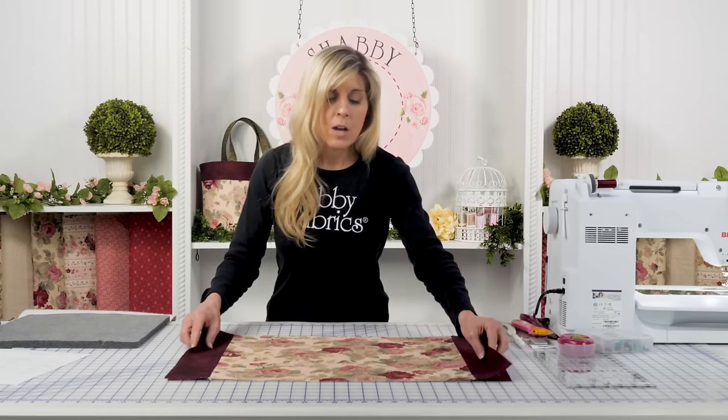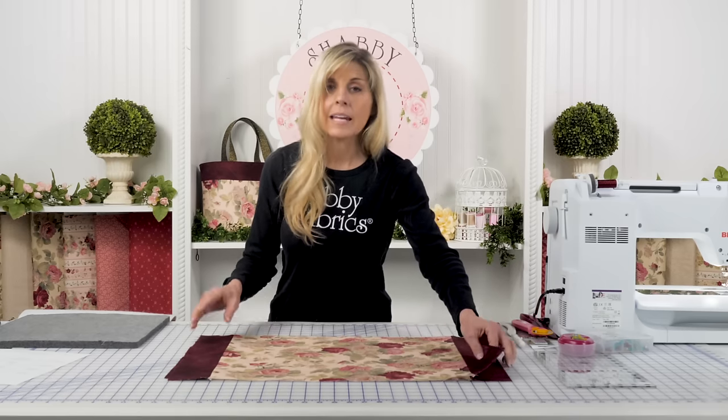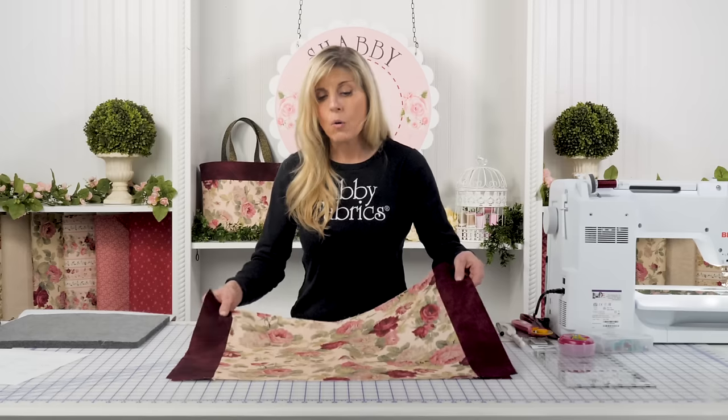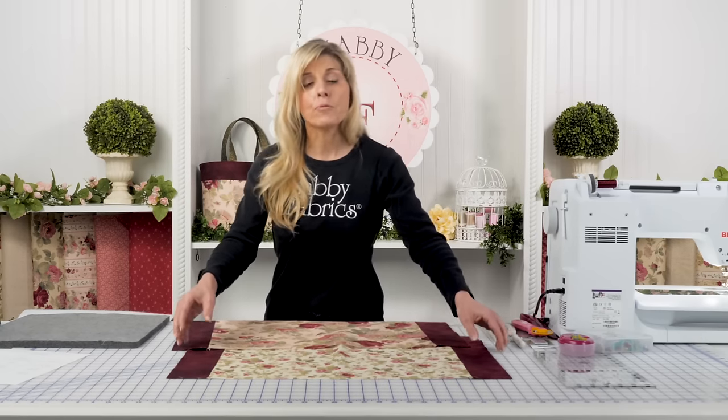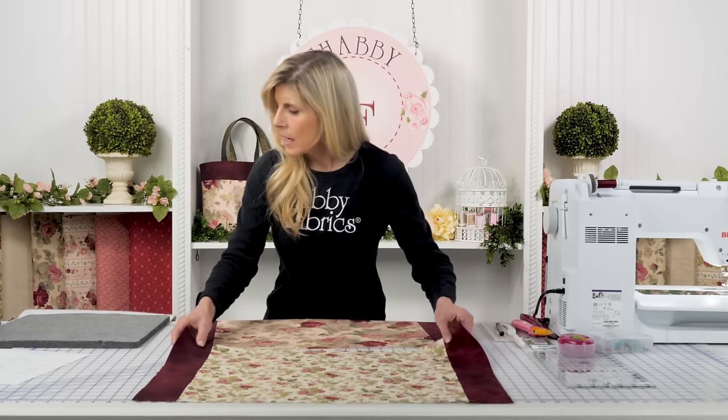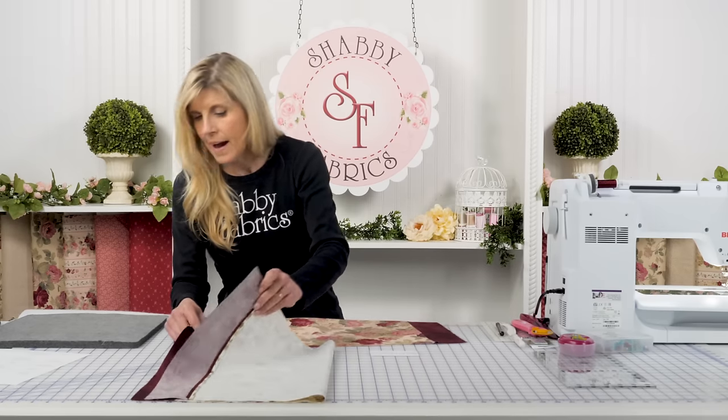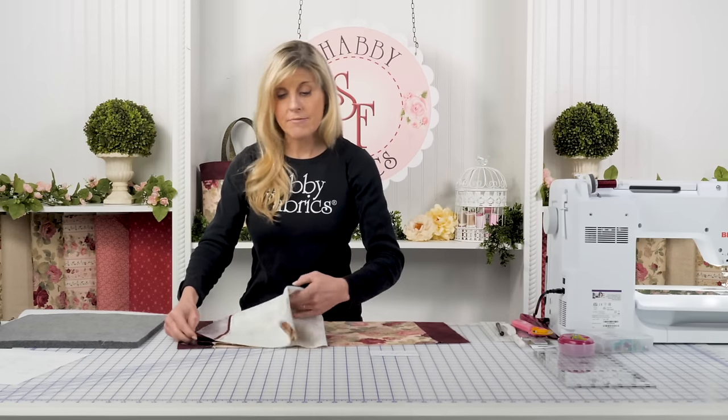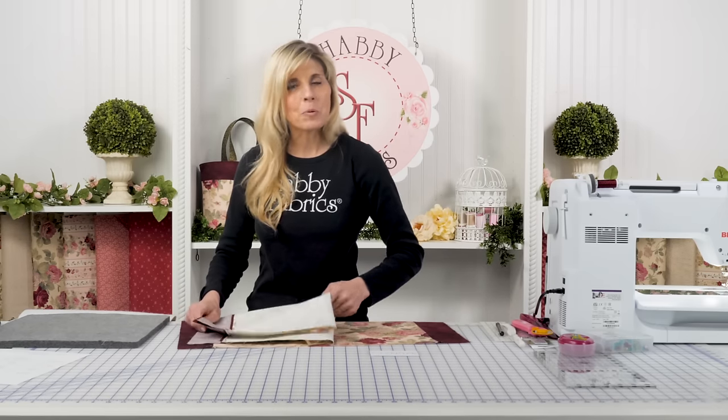Once you have that done for both the main and the lining fabric, for the main fabric only, we'll be adding that fusible fleece. I believe that's cut to 25 and a half by 17. We'll be putting that on the back of our main fabric, and then we get to do some quilting.